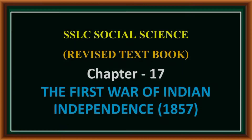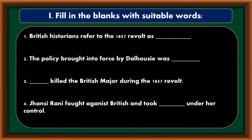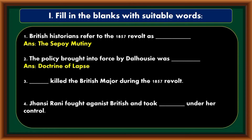Dear students, welcome to 10th standard Social Science revised textbook videos. In this video, let us see Chapter 17: The First War of Indian Independence. First main: Fill in the blanks with suitable words. British historians refer to the 1857 revolt as the Sepoy Mutiny. The policy brought into force by Dalhousie was the Doctrine of Lapse.